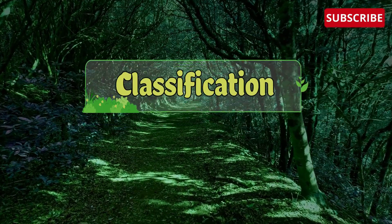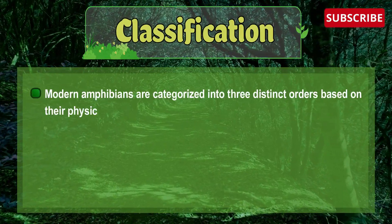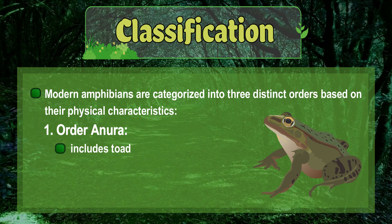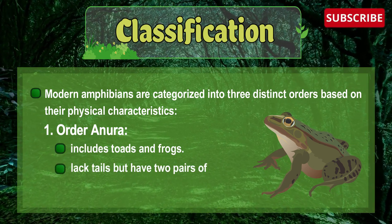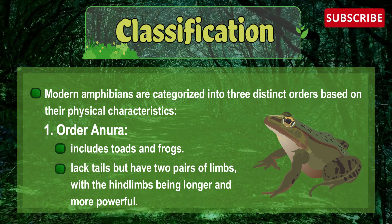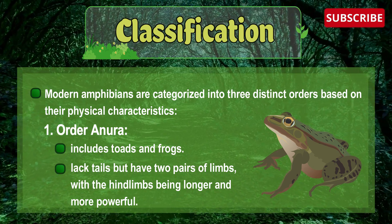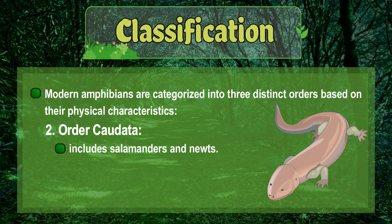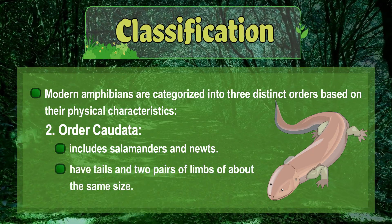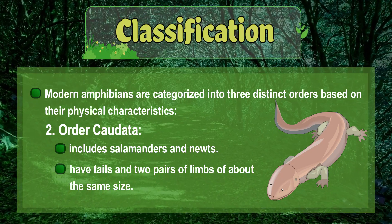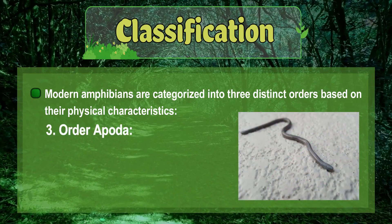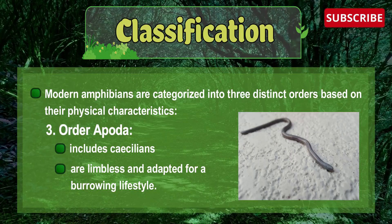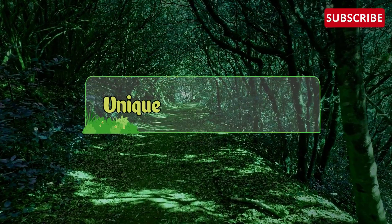Modern Amphibians are characterized into three distinct orders based on their physical characteristics. Order Anura includes toads and frogs — they lack tails but have two pairs of limbs, with the hind limbs being longer and more powerful. Order Caudata includes salamanders and newts, which have tails and two pairs of limbs of about the same size. Order Apoda includes caecilians, which are limbless and adapted for a burrowing lifestyle.